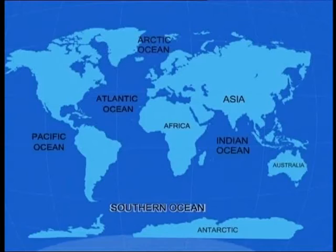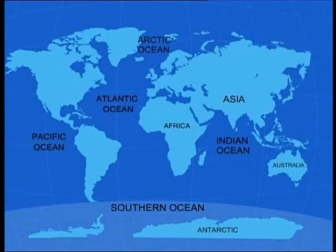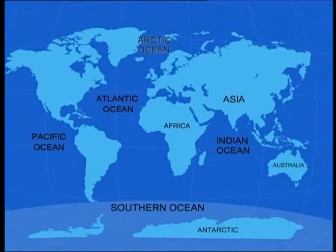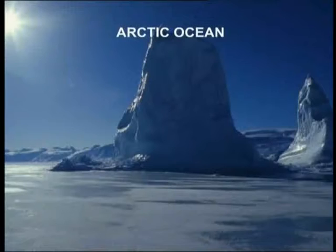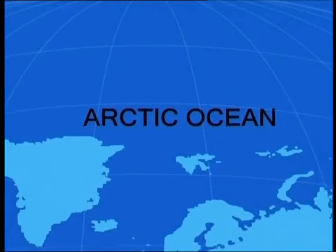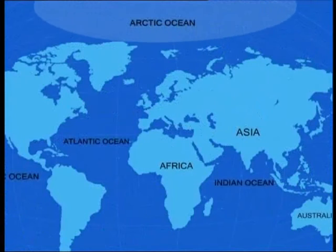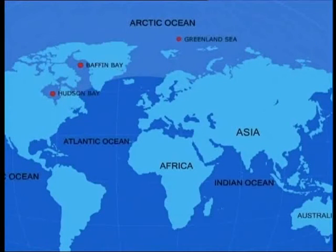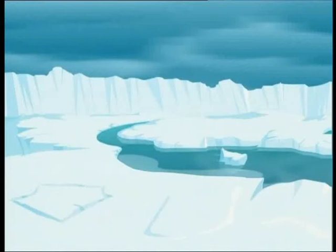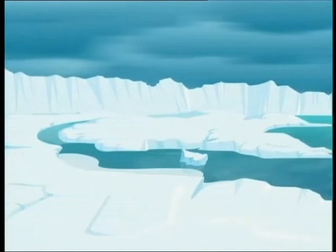The Southern Ocean extends from the coast of Antarctica north to 60 degrees south latitude. The Southern Ocean is now the fourth largest of the world's five oceans, after the Pacific Ocean, the Atlantic Ocean and the Indian Ocean, but larger than the Arctic Ocean. It includes the Amundsen Sea, the Bellingshausen Sea and the Ross Sea.